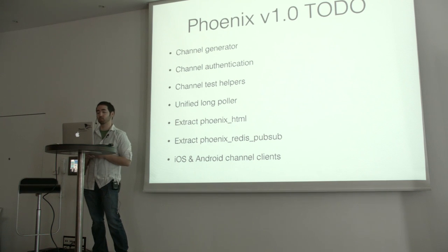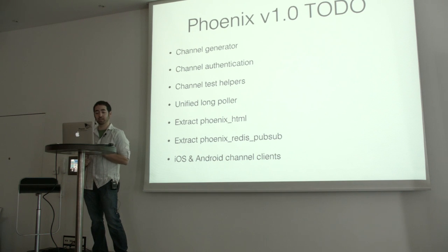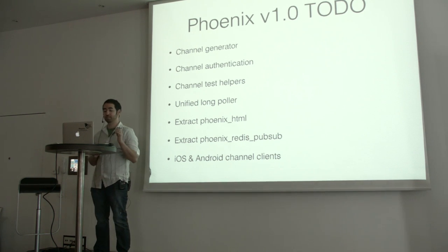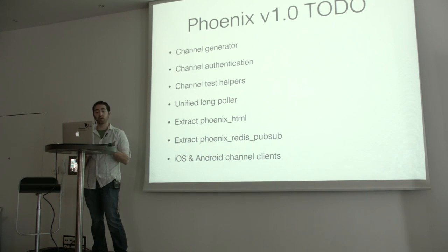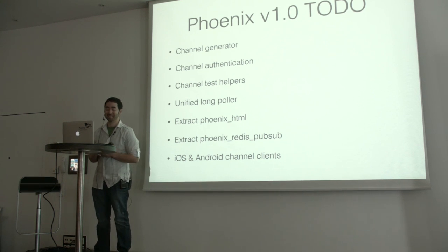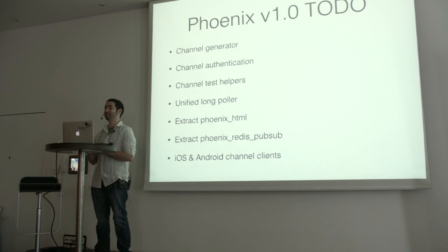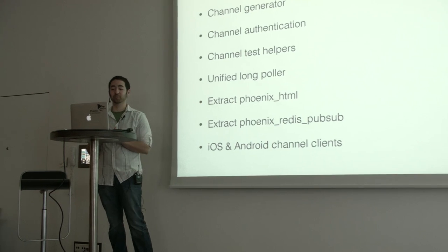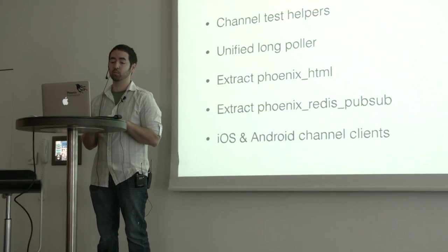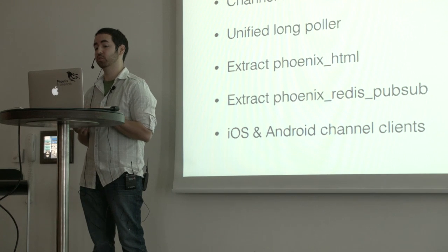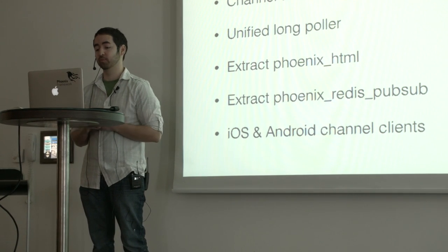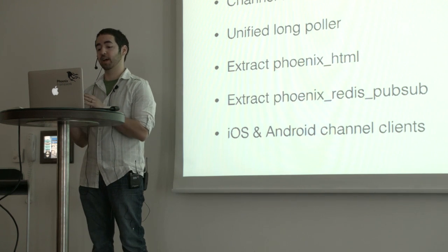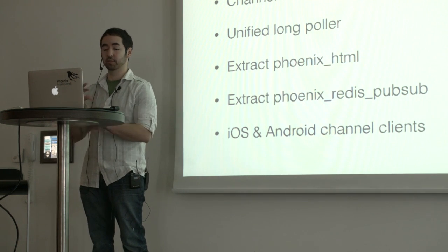We want to focus on extracting some things to keep the core of Phoenix nice and slim. I've always promised we'll have iOS and Android channel clients. We have an Objective-C and a Swift library that will be ready. I'm assuming someone will step up and write the Android client — if you have Android experience, please contact me. I think hitting the browser and most mobile platforms will really accelerate Phoenix, and it doesn't take much code to write a channel client, so I think we'll hit all major platforms.